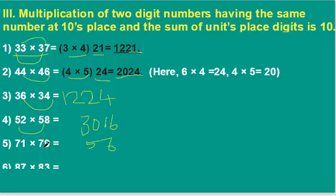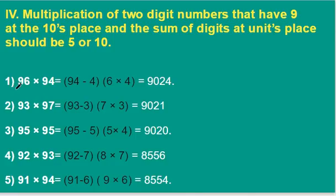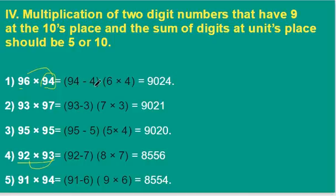For the numbers which have 9 at the tens place and the sum of the unit digits is 10, we have to use this trick. 94 is the smaller number: deduct 94 minus 4 to get 90, and do 6 into 4 is 24, therefore the answer is 9024. Here also: 93 is the smaller number compared to the other.